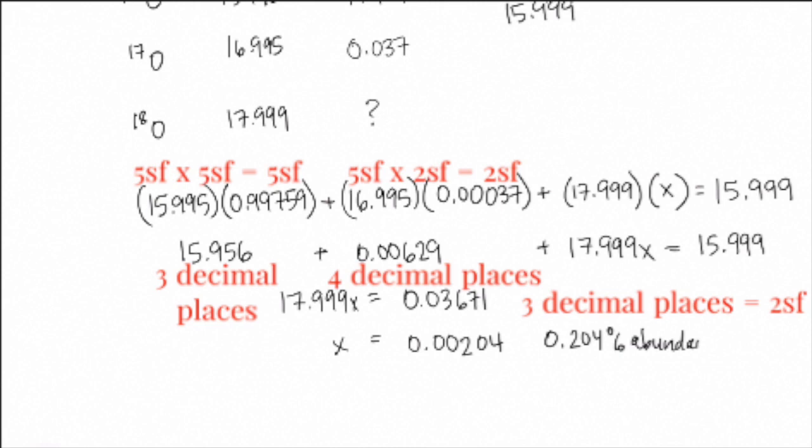Again, pausing for a minute to talk about sig figs here. In our first row, we've got 15.995 times 0.99759, both of those have five sig figs, so our answer will have five sig figs, 15.956. However, that translates, because the next step is addition, to three decimal places. The second calculation, five sig figs times two sig figs, is only going to have two sig figs, and in our answer that would mean four decimal places, so it would be rounded if we were rounding to 0.0063. We never round, of course, until the very end, so we're going to leave it as 0.00629, but we're going to keep a note that four decimal places is what we've got.